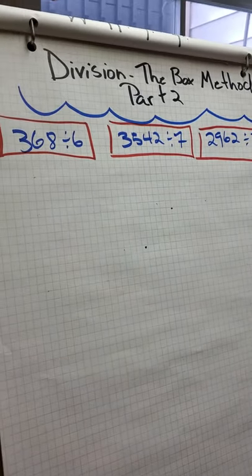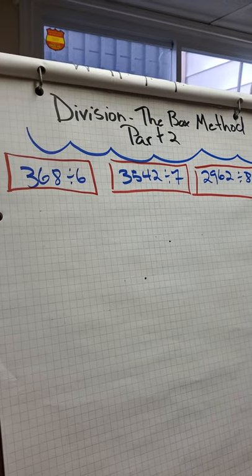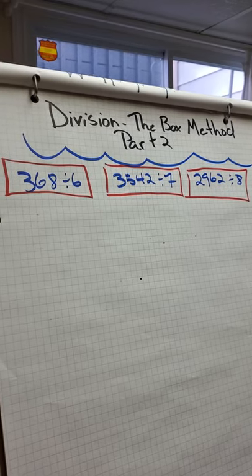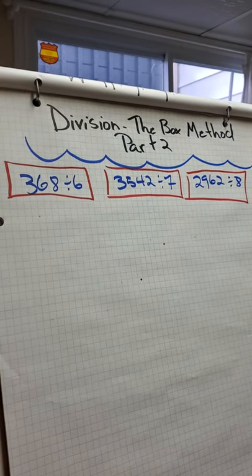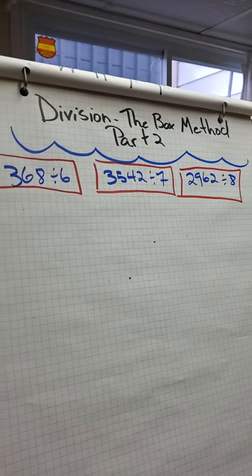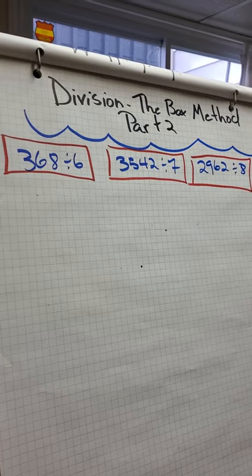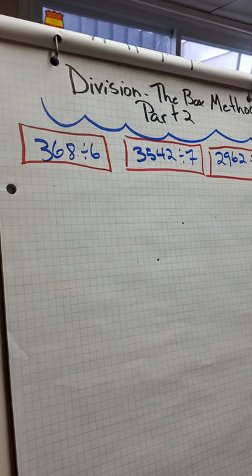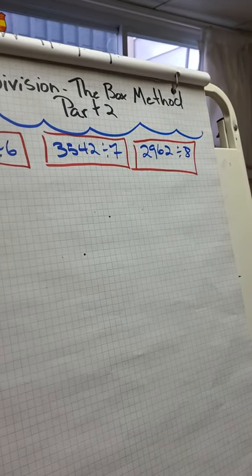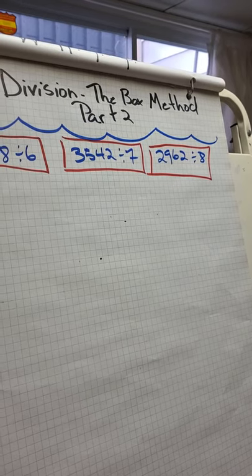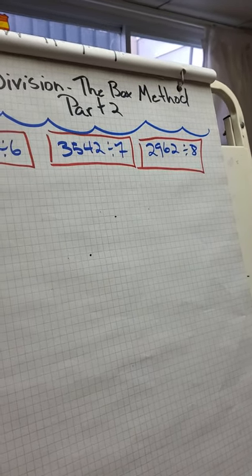Hello everybody, it's Mr. Parsons and it's another math talk. This week we are working on division, the box method part 2. In case this is the first time you've seen it, you can go back and look at the last video, but I'll go over everything step by step. We have three questions to work on today: the first is 368 divided by 6, then 3542 divided by 7, and 2962 divided by 8 — those last two are more difficult.